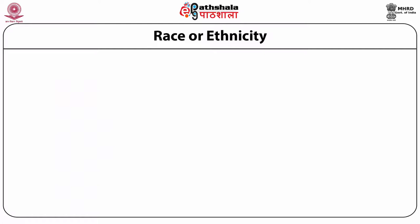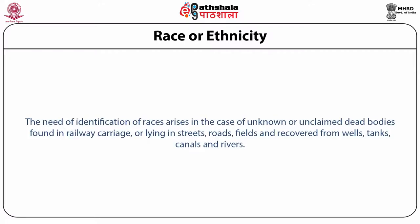Race or ethnicity is a primary source of identification. The question of the determination of race is a common issue in personal identification. The identification of races is required in cases of unknown or unclaimed dead bodies found in railway carriages, lying in streets, roads, fields, and recovered from wells, tanks, canals and rivers.